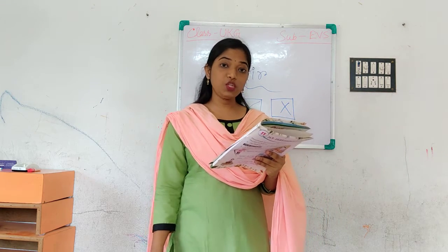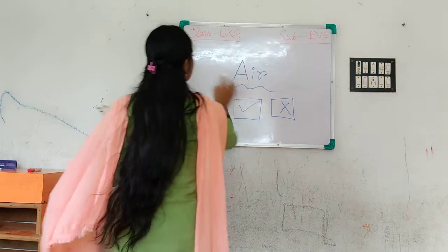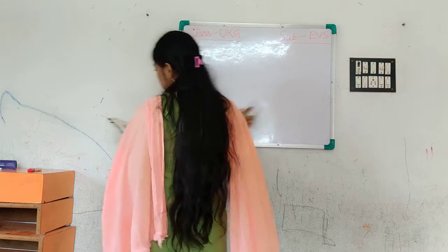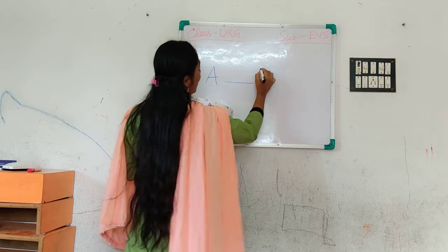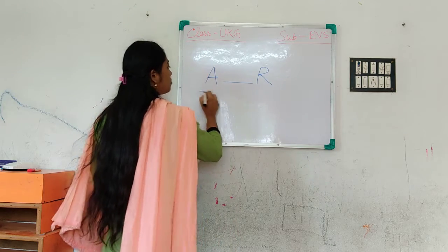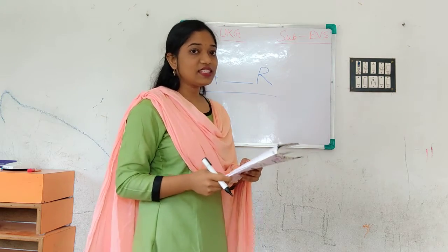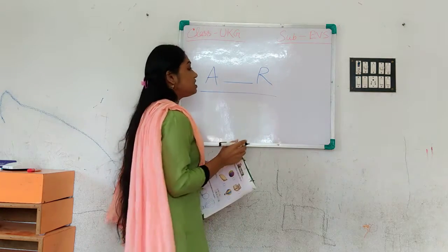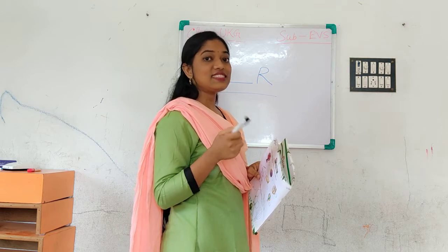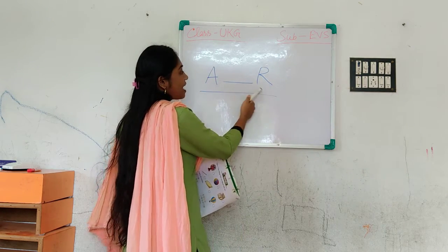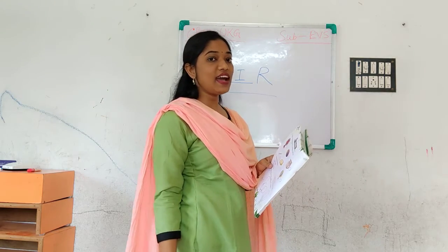Question number 2, that is fill in the blanks. There is a blank, then R. Can you guess the word? It is air. What is the spelling of air? A, I, R — that is air. There is already A and R, so just write I. Air: A, I, R.